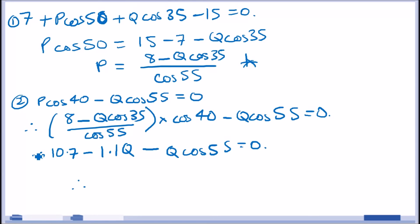And then, make Q the subject. Factorize this. So, you have Q bracket 1.1 minus cos 55. And put 10.7 on the other side. So, Q equals minus 10.7 over, subtract these, divide these two. So, 1.1 plus bracket minus cos 55. And what do we get here? Put in the calculator, you should get...